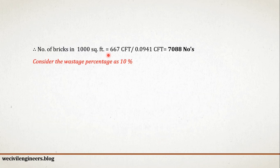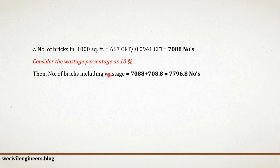Therefore, number of bricks in 1000 square foot equals 667 cubic foot divided by 0.0941 cubic foot, which is equal to 7088 number of bricks. Considering the wastage percentage as 10%, number of bricks including wastage equals 7088 plus 708.8, which is equal to 7796.8 numbers.